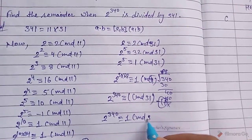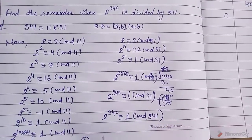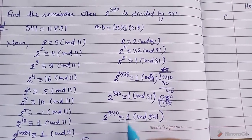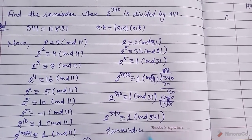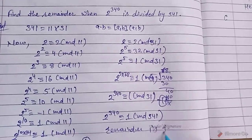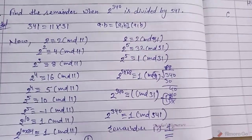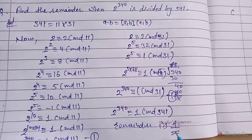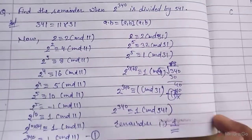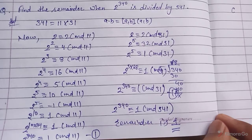So 2^340 ≡ 1 (mod 341). The remainder is 1. Try the questions, and if any problem comes, ask. Thank you.